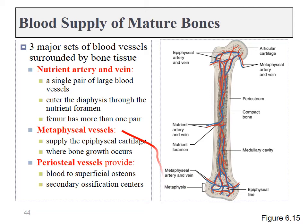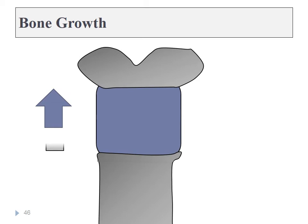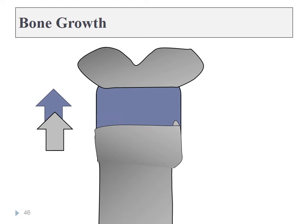The epiphyseal plate will continue to grow throughout childhood. This cartilage expands and is replaced by bone tissue from the more proximal end. As this cartilage tissue grows and pushes the epiphysis more distal, it is replaced by bone tissue proximally by the process of endochondral ossification. The epiphyseal plate therefore remains roughly the same diameter, but the long bones grow significantly longer as opposed to wider.